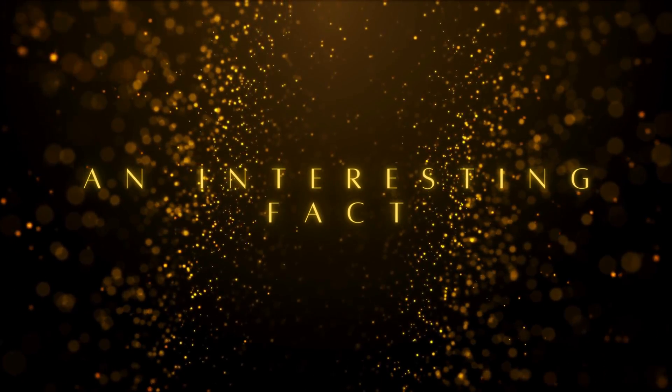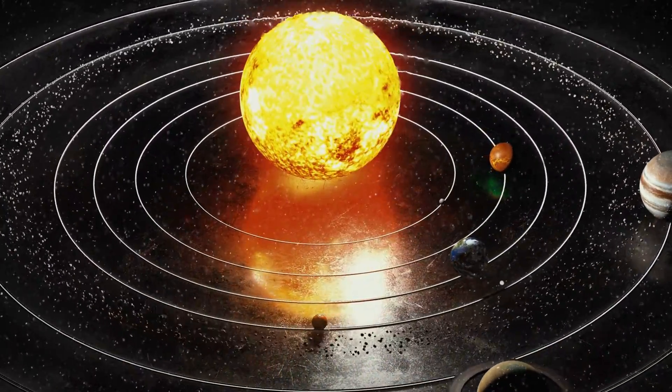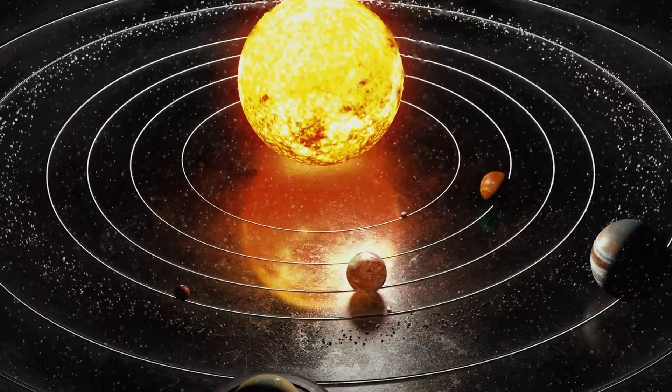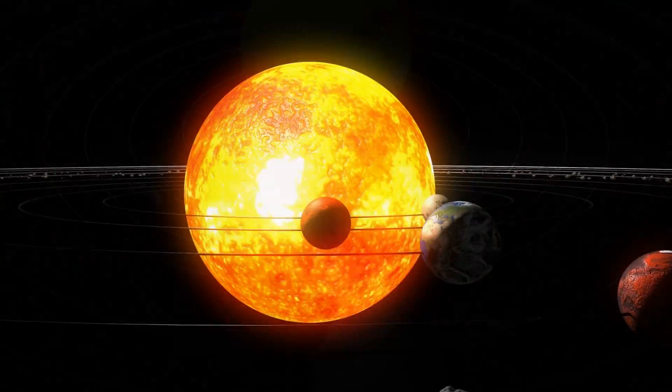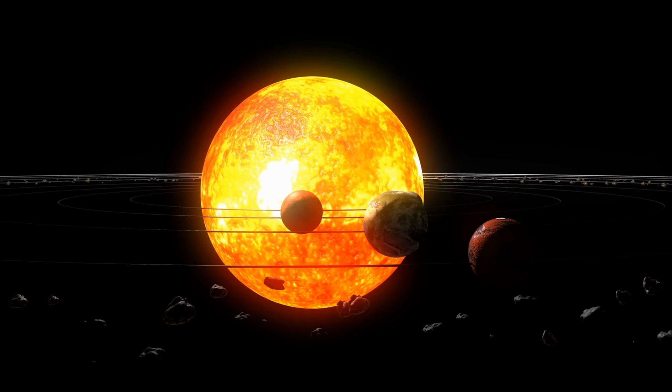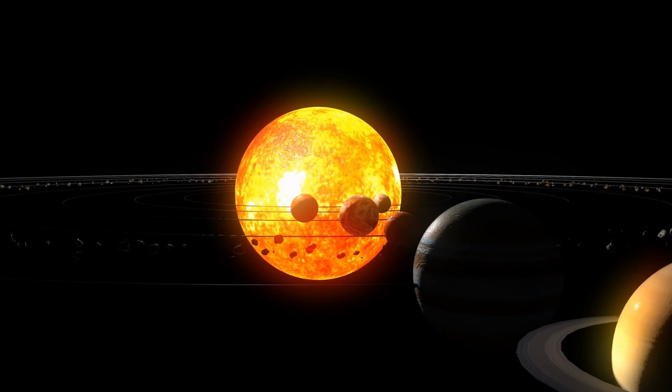An Interesting Fact, Fact Number 12. The Sun, about 4.6 billion years ago, is believed to have been surrounded by a disk of gas and dust early in its history when the Solar System was first forming. Some of that dust is still around today, in several dust rings circling the Sun.